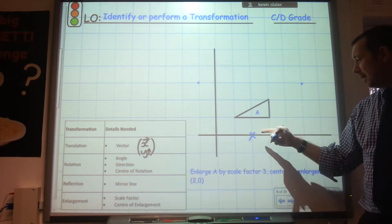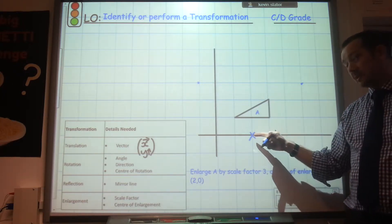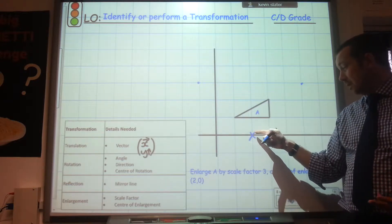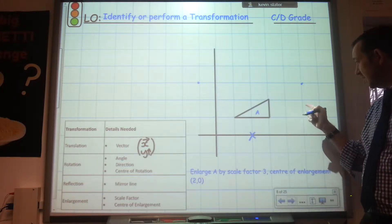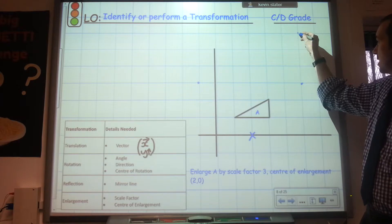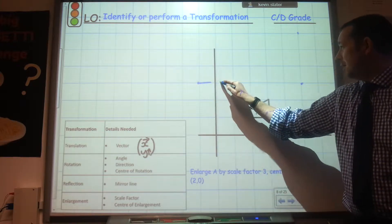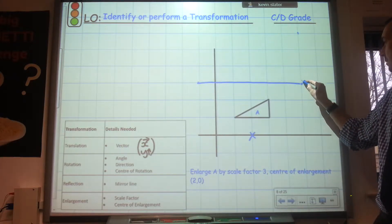And to get to this corner I've gone along 1 and up 2. So now times that by 3, I need to go along 3 and up 6. So that corner is going to end up there. So in fact my new shape should look like this.